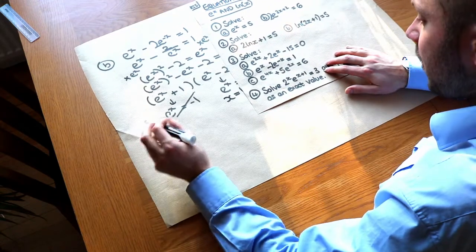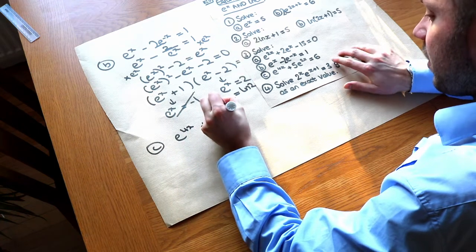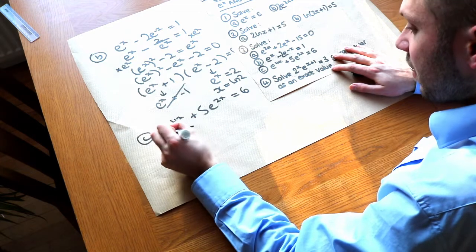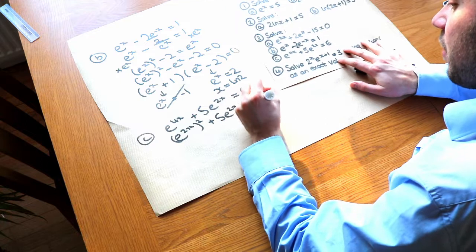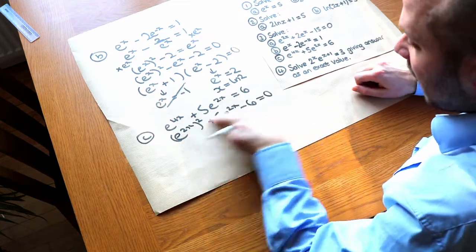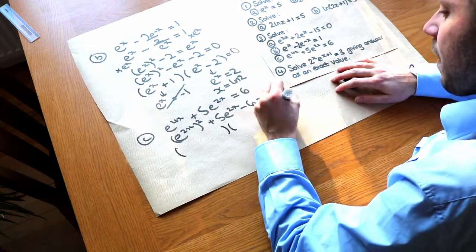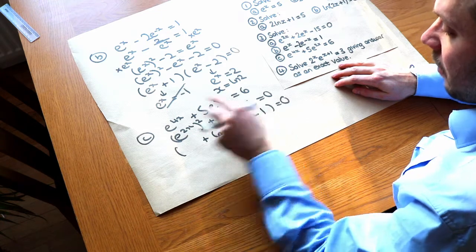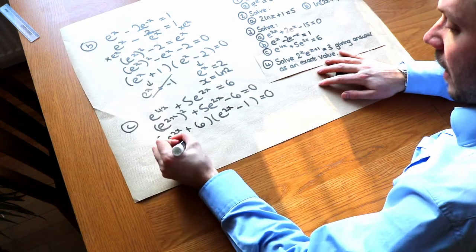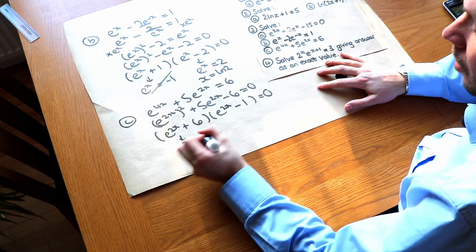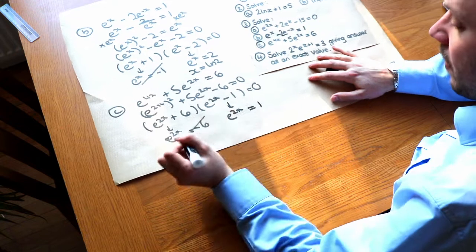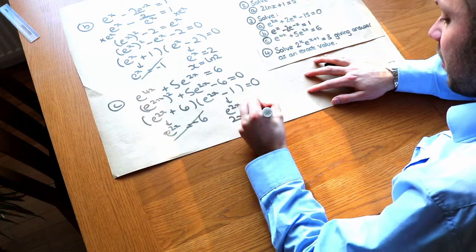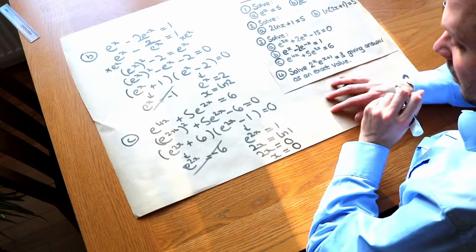The final quadratic-type equation is e to the 4x plus 5e to the 2x equals 6. Rewriting as (e to the 2x)² + 5(e to the 2x) − 6 = 0, this is a quadratic in e to the 2x. Two numbers that add to 5 and multiply to −6 are +6 and −1, so it factorises to (e to the 2x + 6)(e to the 2x − 1) = 0. e to the 2x = −6 gives no solution, but e to the 2x = 1 means 2x = ln 1 = 0, so x = 0 is the only solution.